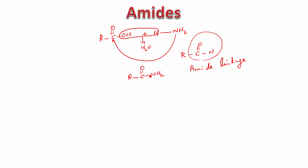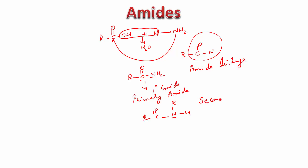Now this nitrogen is attached to only one carbon here — we call it a primary amide, or first-degree amide. If the N were attached to an alkyl group and an H, then N is attached to two carbons — we call it a secondary amide. When it is attached to two alkyl groups, we call it a tertiary amide.